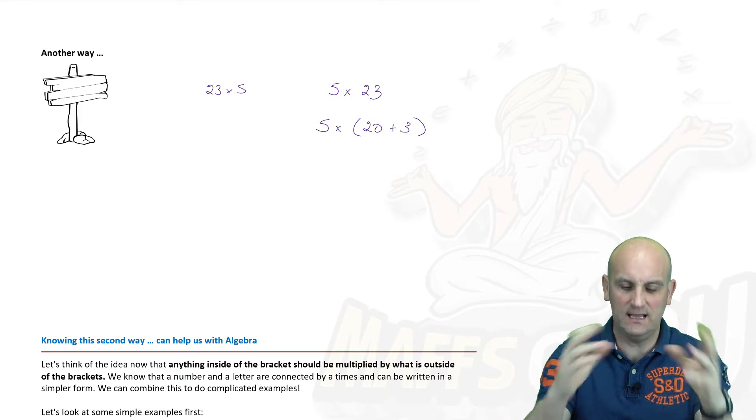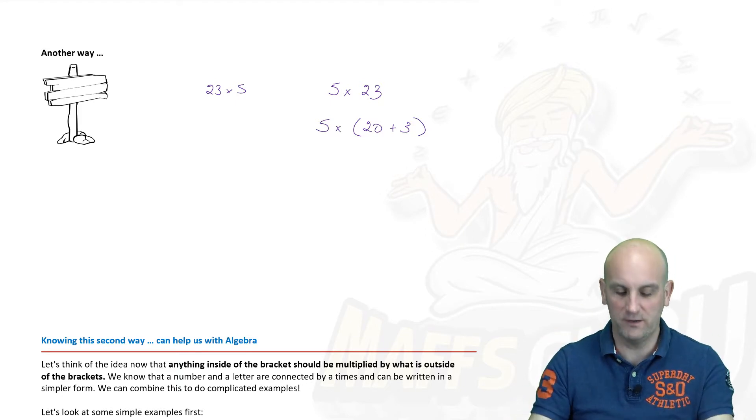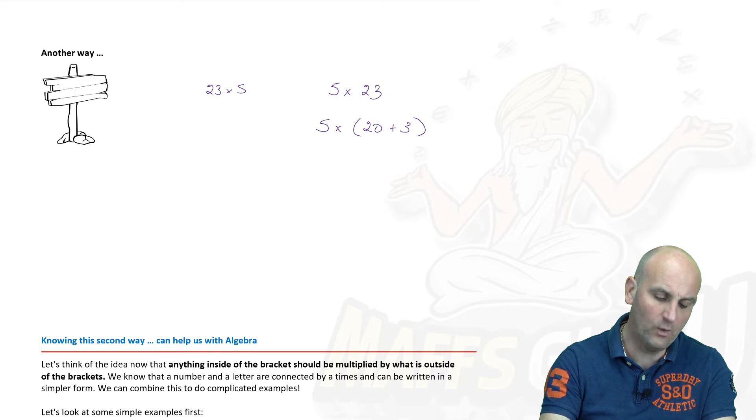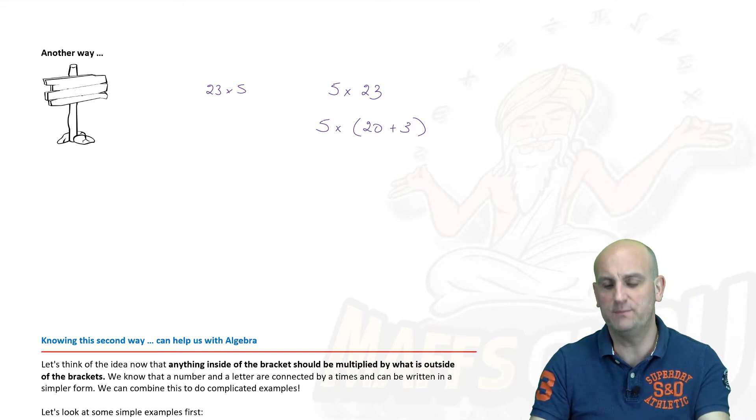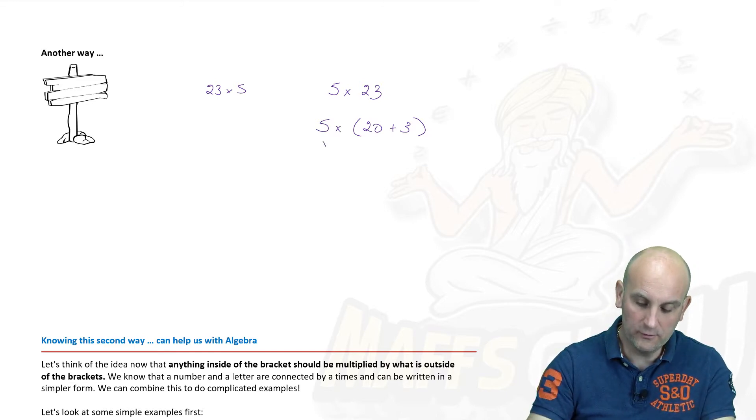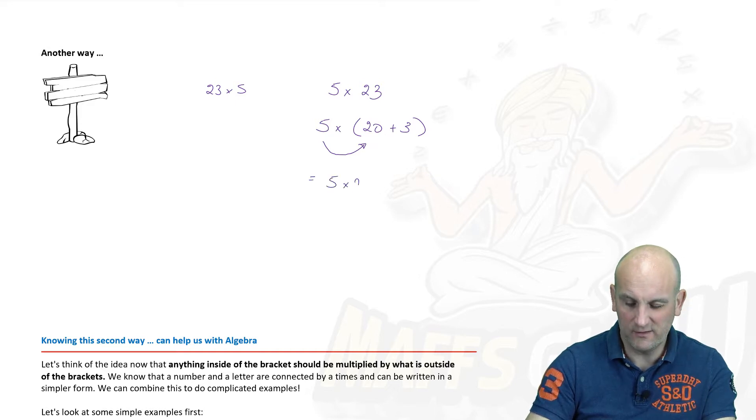So 20 plus my three units. Now what happens then is to multiply these out together I could do the 5 times the 20. So that's the same as 5 times 20 plus 5 times 3.